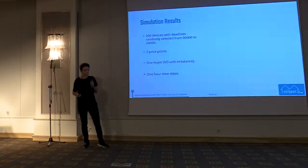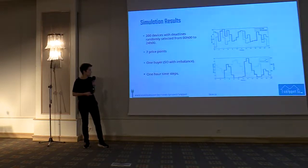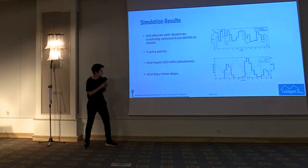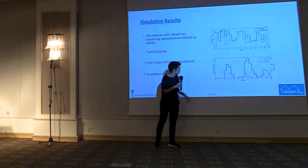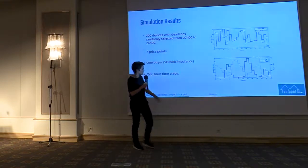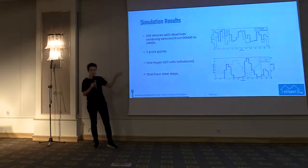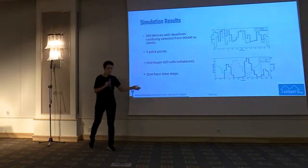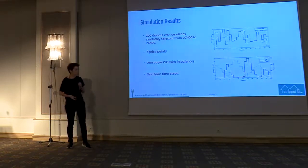We performed simulations considering 200 devices with one-hour time steps. In the graph, the blue dotted line is the day-ahead price and the red line is the allocated power. We can see that power was allocated precisely when day-ahead prices were lower, which was exactly the purpose of the optimization.